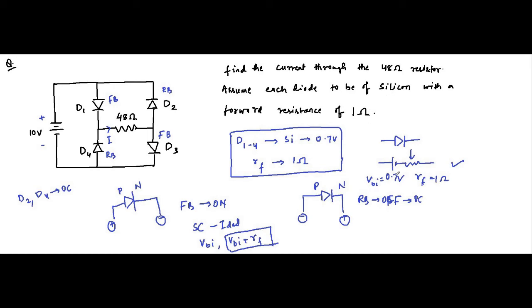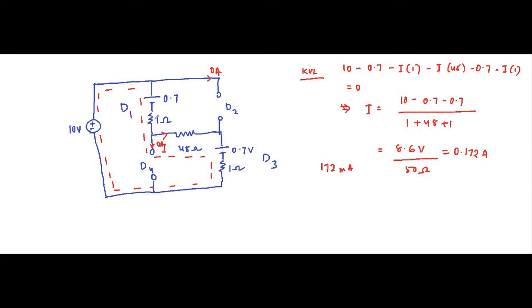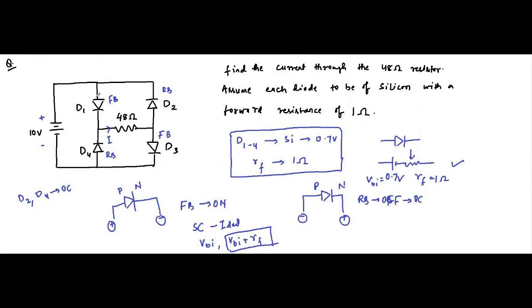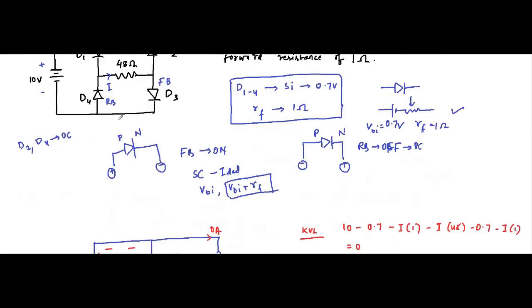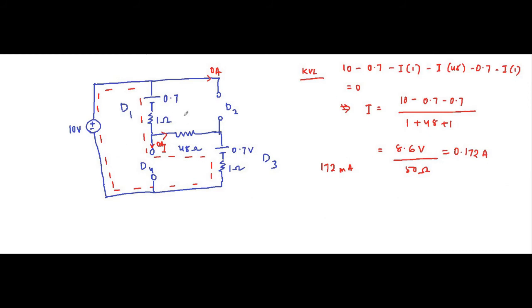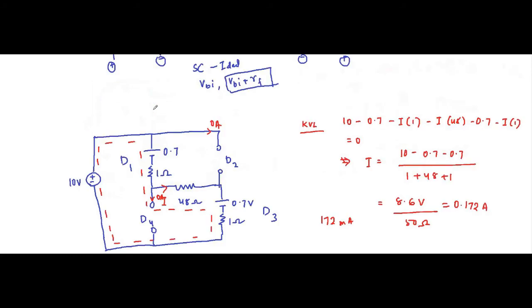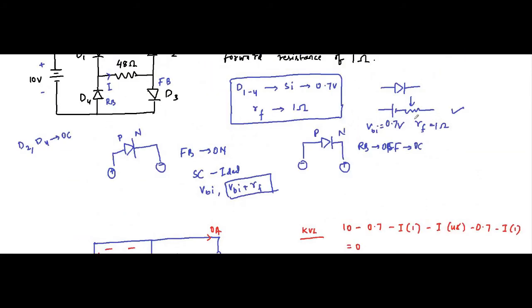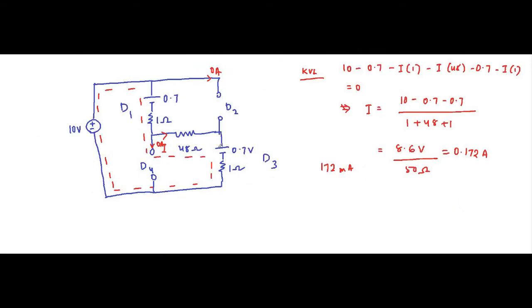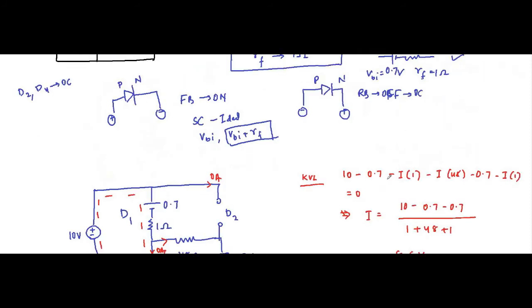We have to replace the built-in potential of the diode with 0.7 volt because silicon is mentioned, and the forward resistance of 1 ohm. We identified which diodes are forward biased and which are reverse biased depending on their connection — which end (P or N) is connected to which terminal of the supply. Reverse biased diodes are replaced with open circuit; forward biased diodes are replaced with their equivalent circuit of built-in potential and forward resistance. Then we apply KVL to find the current.